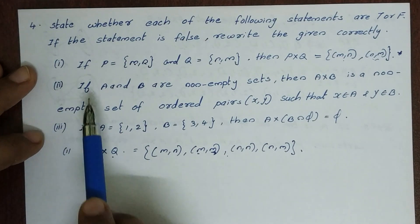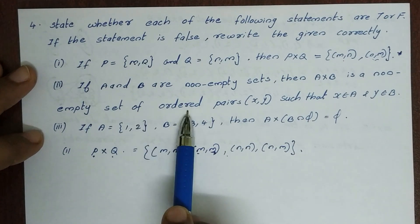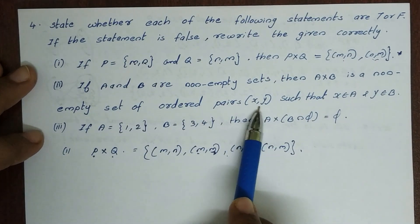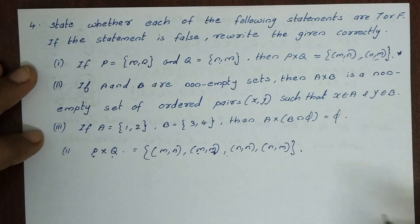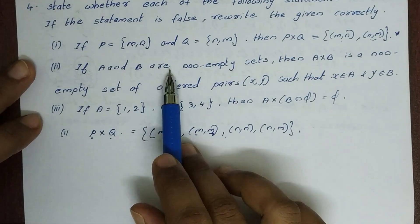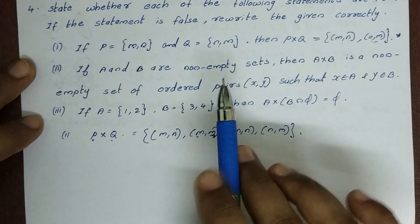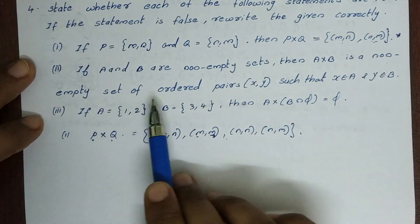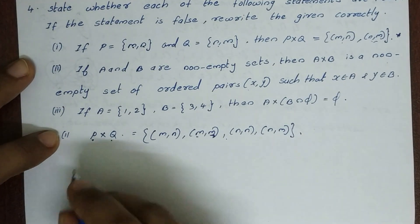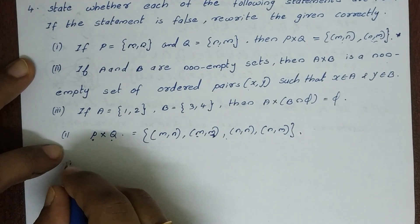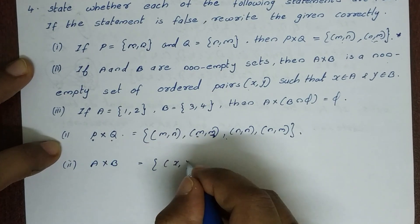Second statement: if A and B are non-empty sets, then A×B is a non-empty set of ordered pairs (x, y) such that x belongs to A and y belongs to B. This statement is true.